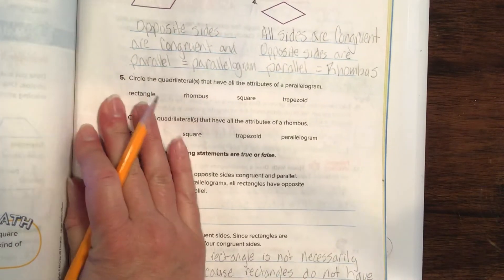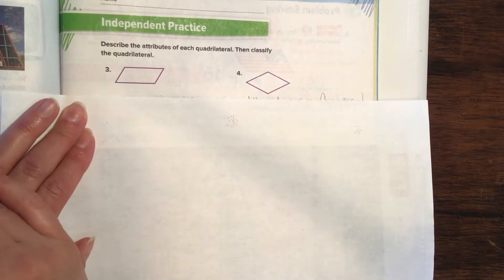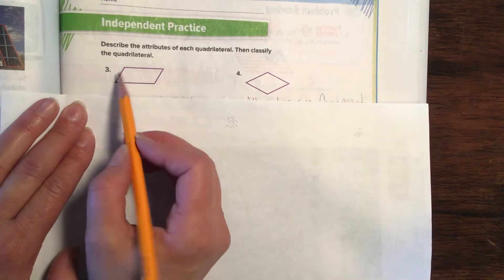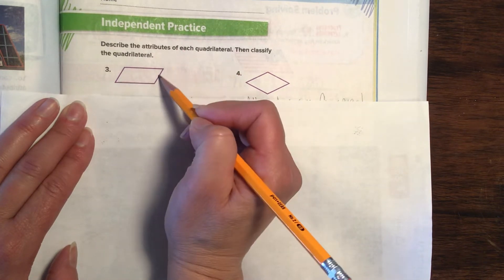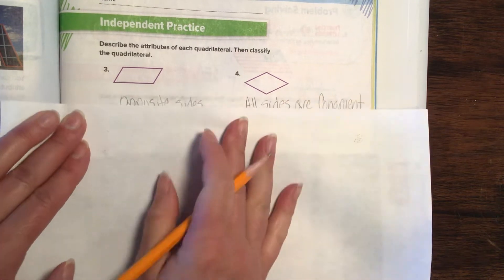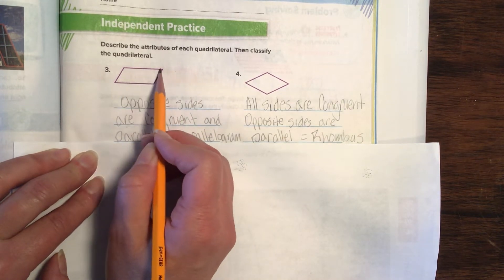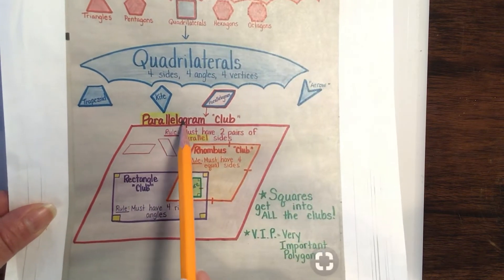We're going to dive on over to page 931. Describe the attributes of each quadrilateral and then classify the quadrilateral. They want us to talk about sides, tell if they're parallel, and then tell what club it fits into. This side and this side are parallel — one pair of parallel sides. That side and that side are parallel — two pairs. Opposite sides are congruent, which means they are the same length, and they're parallel. So we're going to call that a parallelogram.